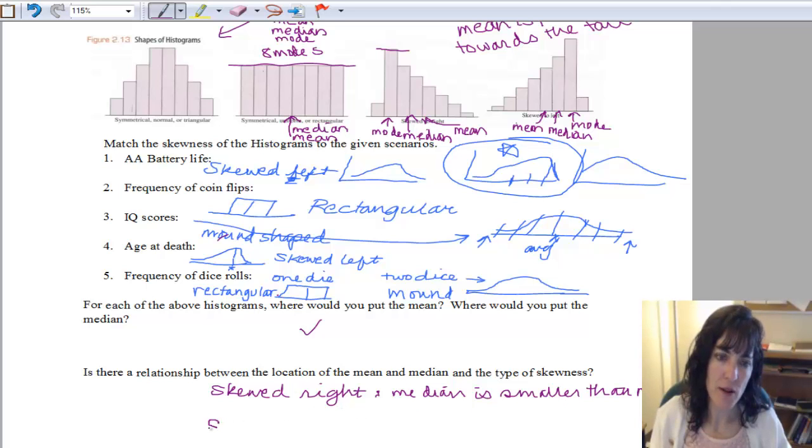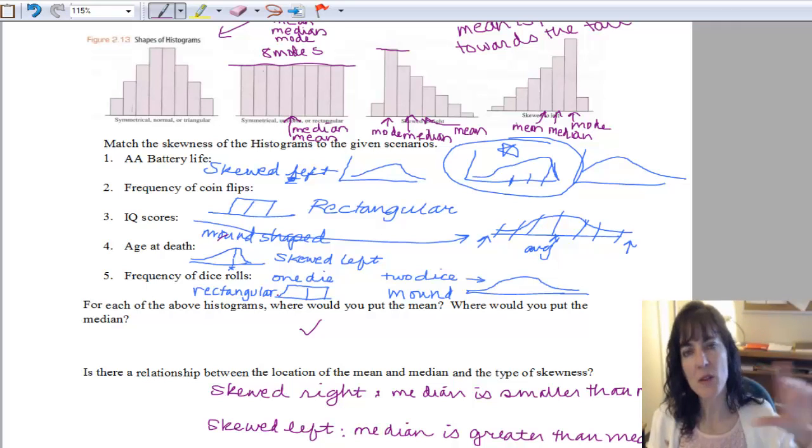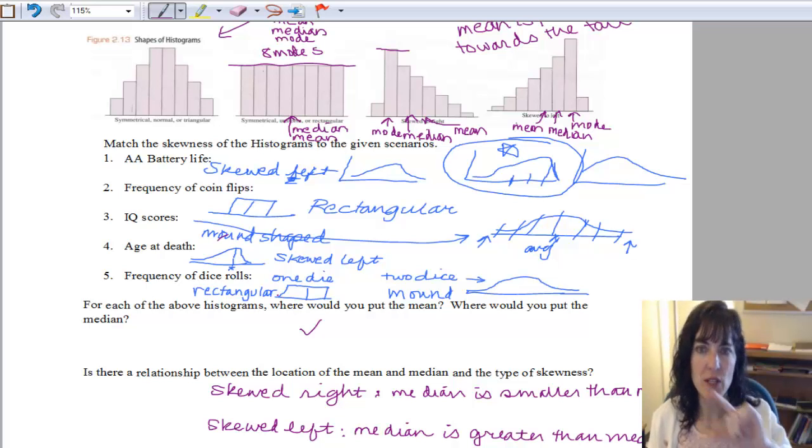And if it's skewed left, the next one, then we can see that our median is greater than our mean. We can put it in the same order, median is greater than mean. Okay, so remember the tail is pulling the mean away from the median, so if it's skewed left, then the mean is being pulled towards the tail, so it's going to be smaller than the median.